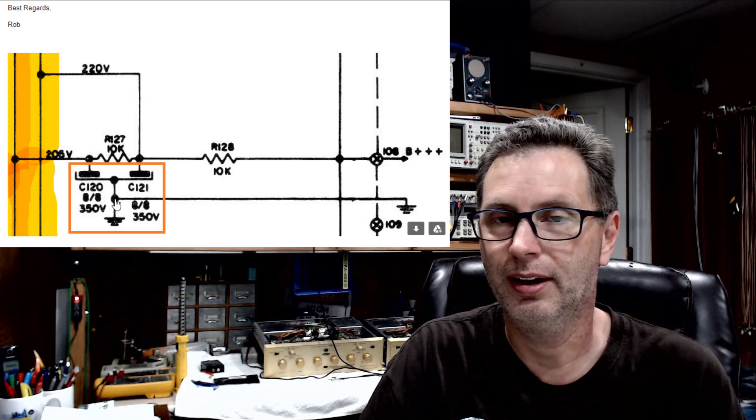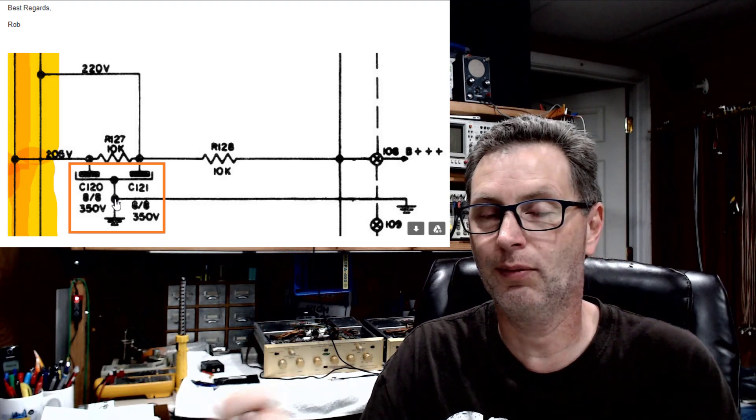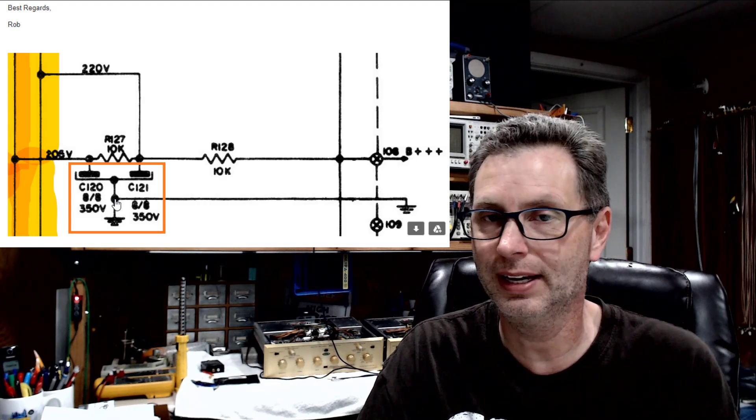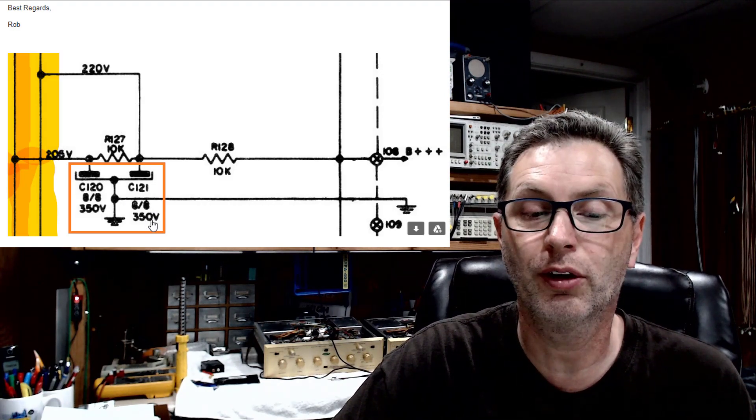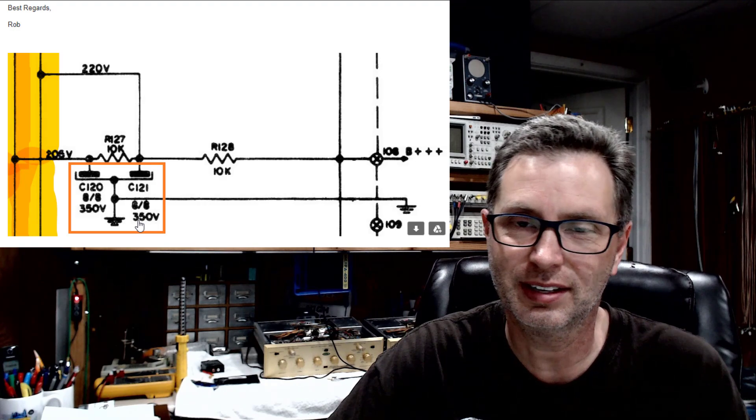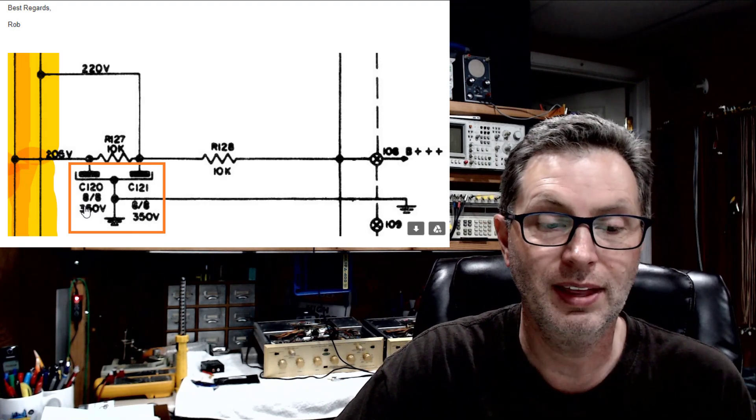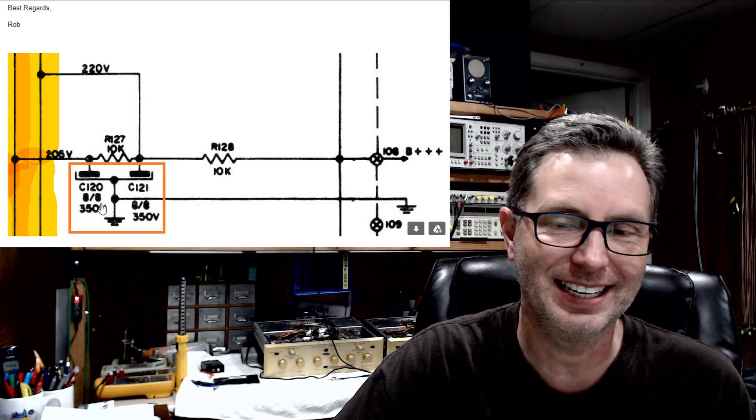It's not inside of a metal can. You just have one lead coming out of one end and two leads coming out of the other end. But based on the fact that these are 350 volts on each side, I'm betting this is a can cap. And then you'll notice here it kind of has this 8 slash 8, which is kind of confusing.